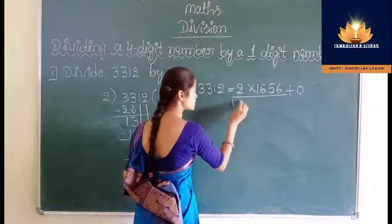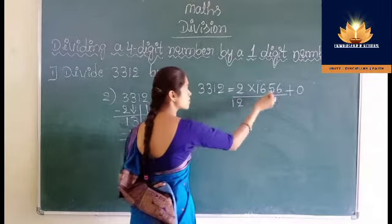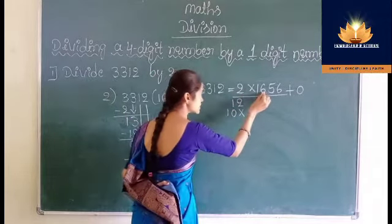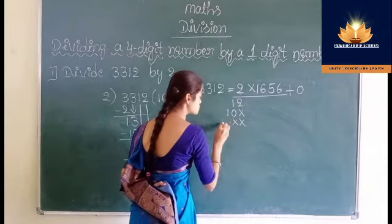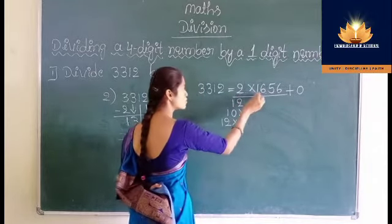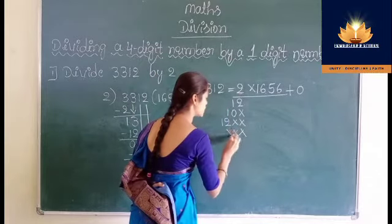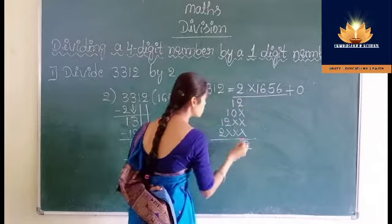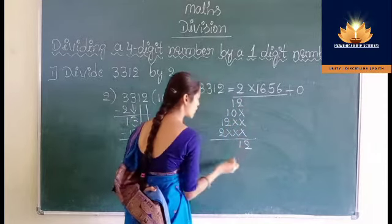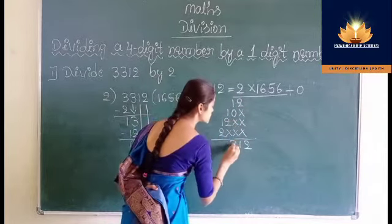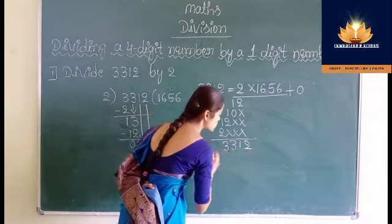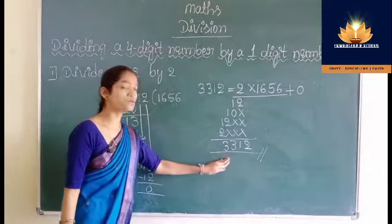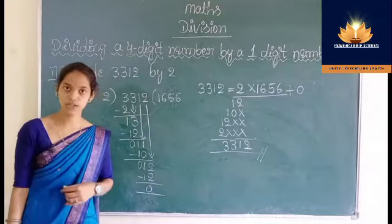6 twos are 12, 5 twos are 10, 6 twos are 12 again, 1 two is 2. So we get 3: 2 plus 0 is 2, 1 plus 0 is 1, 1 plus 2 is 3, 1 plus 2 is 3. So we get 3312. LHS is equal to RHS — our division is right.